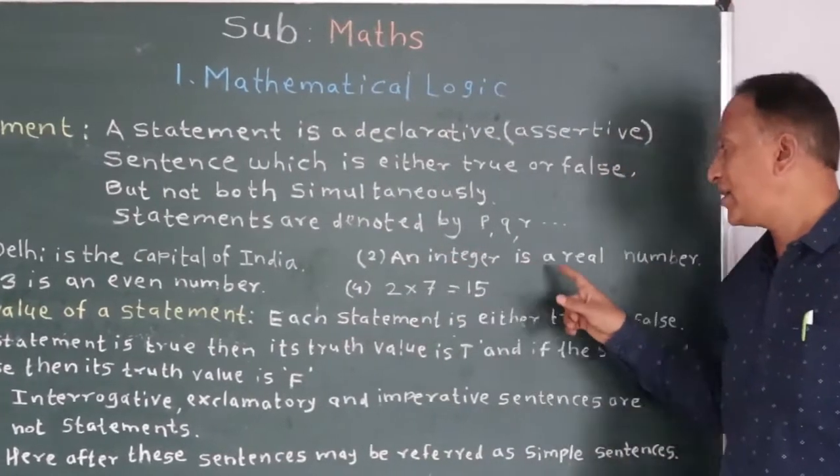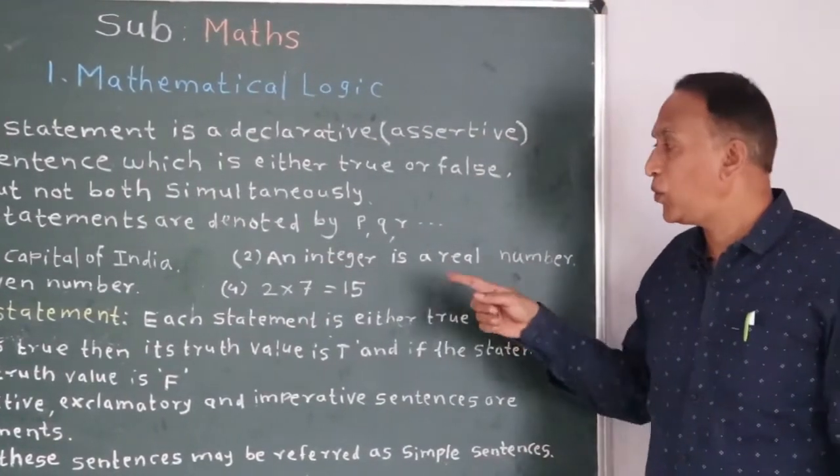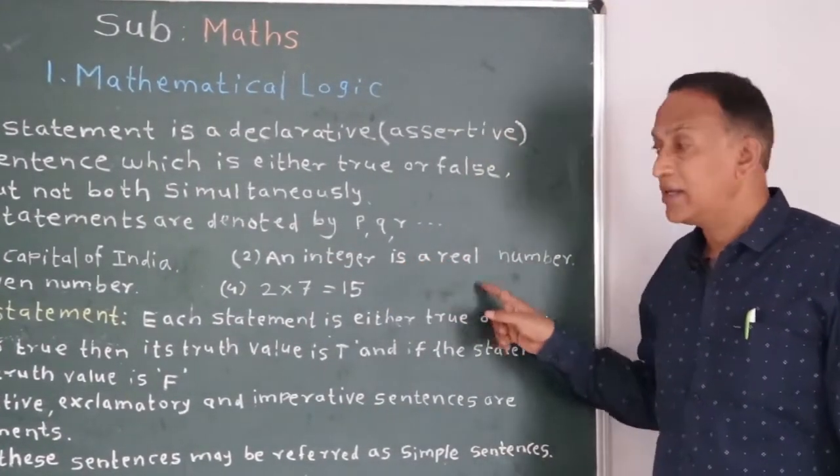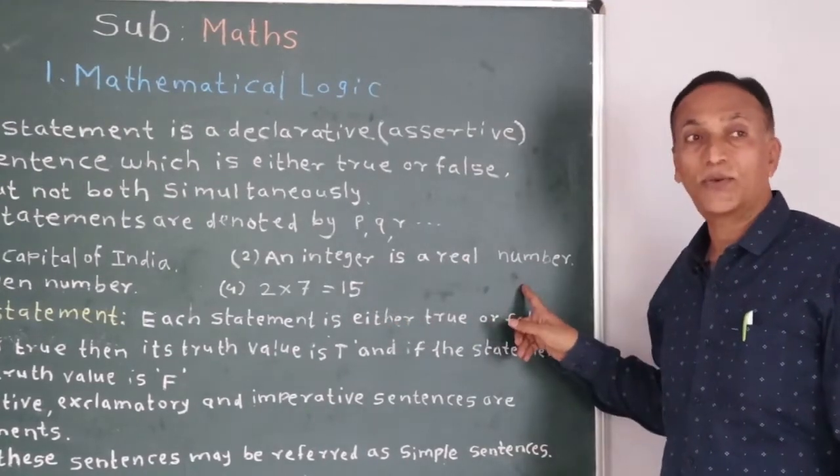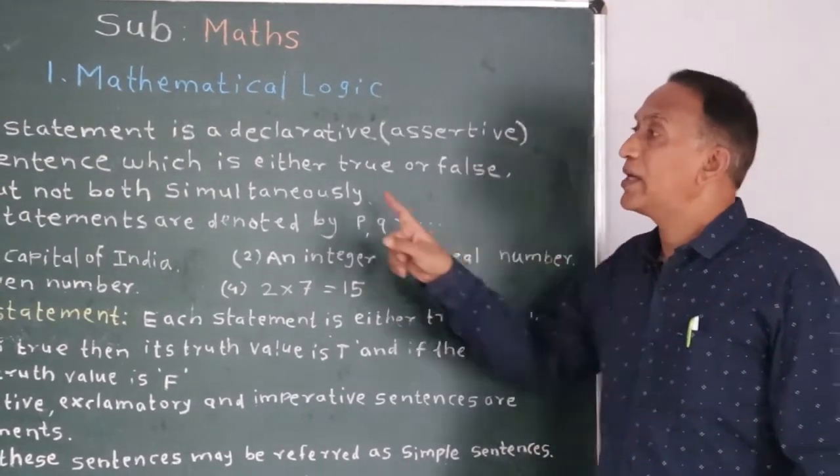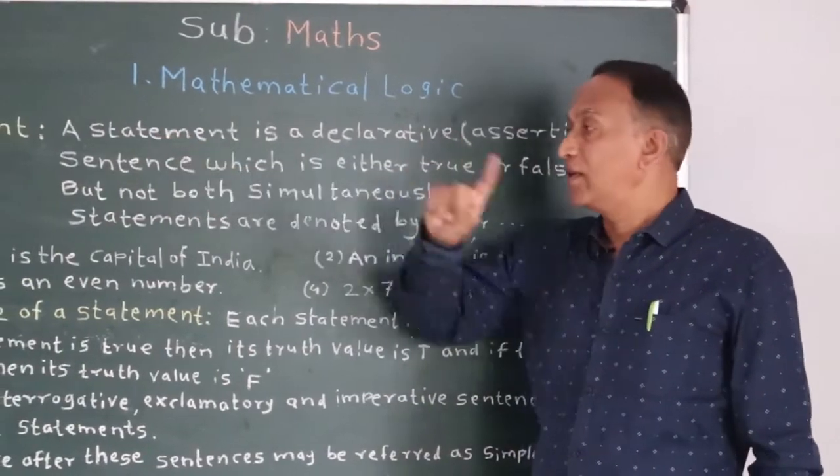We will take another sentence. An integer is a real number. Yes, we know every integer is a real number. That is why this sentence is also a true sentence. So we can say that it is a statement.